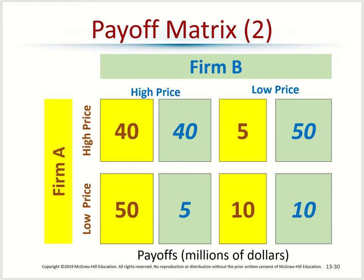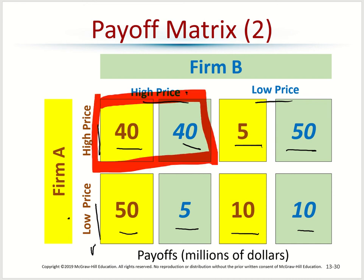Here's an example payoff matrix. Two companies each choose between high price or low price. If both choose high prices, both get a profit of 40. If both choose low prices, both get 10. If Company A chooses high and Company B chooses low, Company A gets 5 and Company B gets 50. If Company B chooses high and Company A chooses low, Company A gets 50 and Company B gets 5. At first glance the best outcome seems to be both choosing high prices — profit of 40 each.